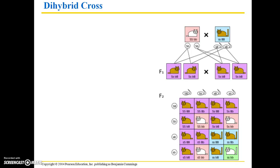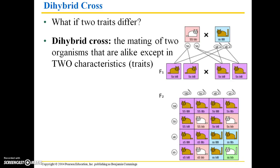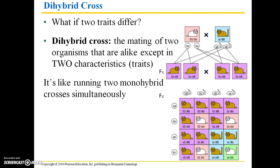Let's pick this up with the dihybrid cross. So far, my examples have just shown you what it looks like when the parent generation differs in one physical characteristic. But what if two traits differ? A dihybrid cross is simply the mating of two organisms that are alike except in two characteristics — for example, these two cats differ only in fur color and tail length. It's basically like running two monohybrid crosses simultaneously. What I'd like to point out here is that you will end up in the F2 generation with unique combinations that weren't seen in the parental generation.